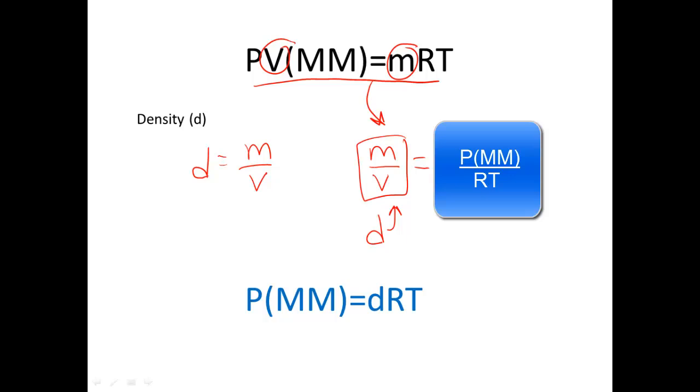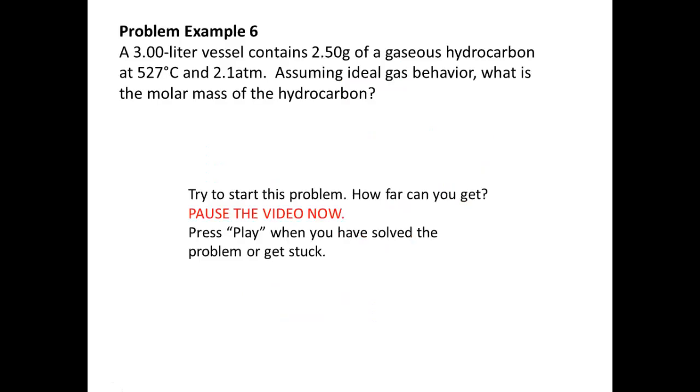So, let's practice this using problem example 6. We have a 3.00 liter vessel containing 2.50 grams of a gaseous hydrocarbon at 527 degrees Celsius. Yikes, that's hot. And 2.1 atmospheres. Assuming ideal gas behavior, what is the molar mass of the hydrocarbon?